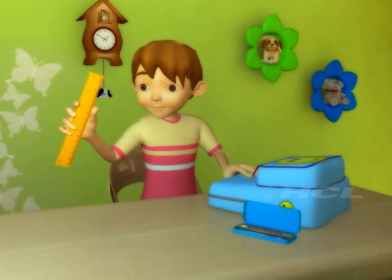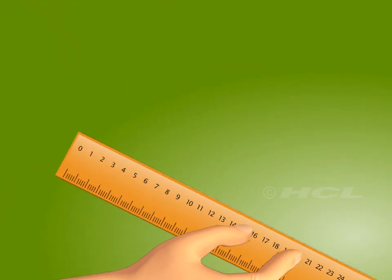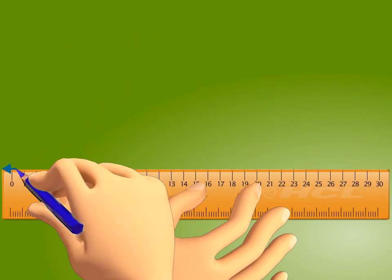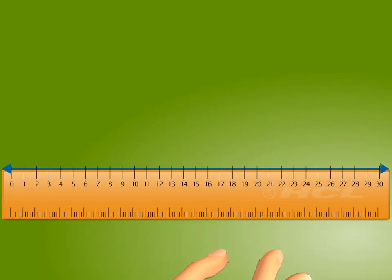Here is a ruler that shows a number line from 0 to 30. We can use this number line to divide numbers.